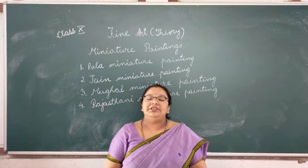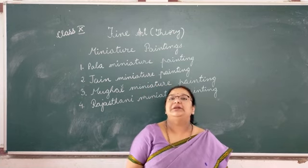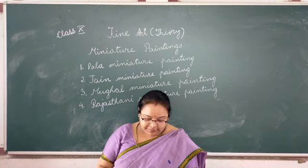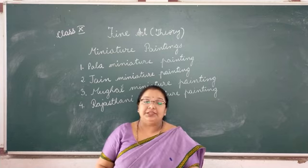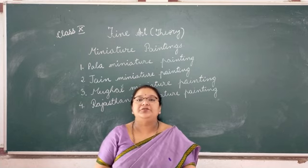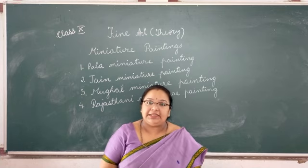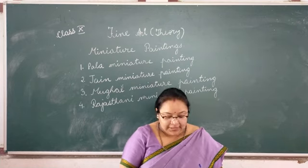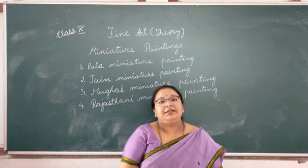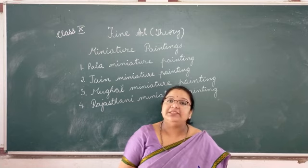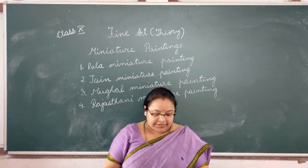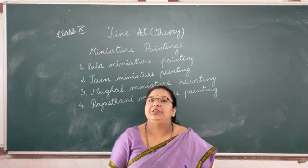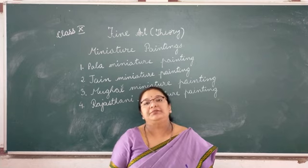Next is Rajasthani miniature paintings. This covers the western and central parts of India, the Himalayan foothills, and some parts of Punjab, during the period from the 16th to 19th centuries. Rajasthani miniature paintings were regional in style — different regions had different styles of painting. They used paintings not only on paper, palm leaves, or cloth, but also to decorate the rooms of palaces and forts.